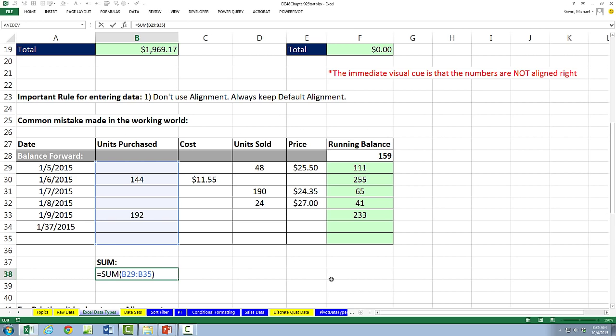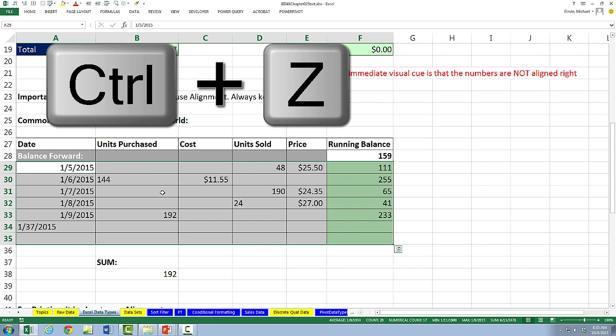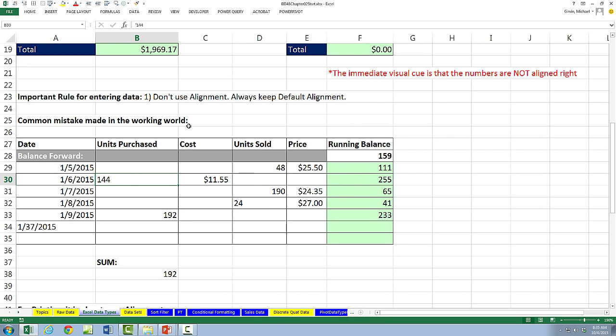If we had avoided using alignment center, and I'm going to Control-Z to undo that, Control-Z, we would automatically have our visual cue. There it is. That's being considered text and we'd have to fix it. So we want to avoid going away from our default left for text, right for numbers.